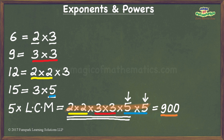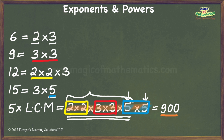A closer look at what I did gives the method which can be used for solving such problems. Basically, we obtain the prime factorization of the LCM of the given numbers and form pairs of identical factors to see whether the LCM is a perfect square. In case nothing gets left out in the pairing process, the LCM is a perfect square and we have our answer. In case something gets left out — as in this case where the factor 5 got left out — we supply what is required for perfect pairing. An additional 5 in this case takes care of the pairing, so that we obtain the least perfect square that is exactly divisible by the given numbers.